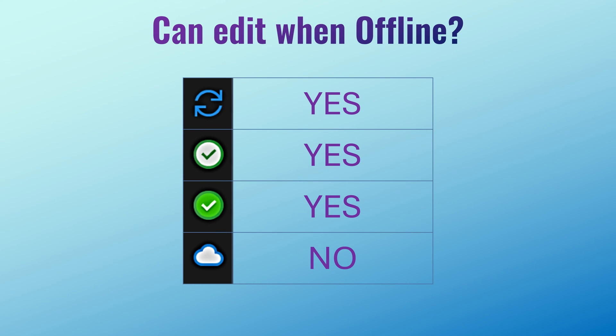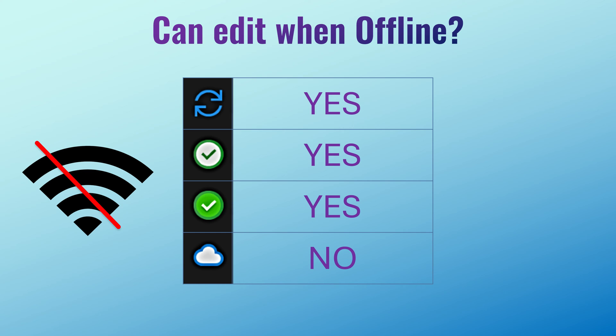Now let's talk about editing. Which files can you edit when you don't have an internet connection? If the file is synchronizing, you already have internet, so no question there. Green and white tick mark means the file is on the local drive, so of course you can edit offline. Only if it is a cloud icon is the file physically not present — you're only seeing the file name, and if you're offline it will give you an error and you cannot edit.